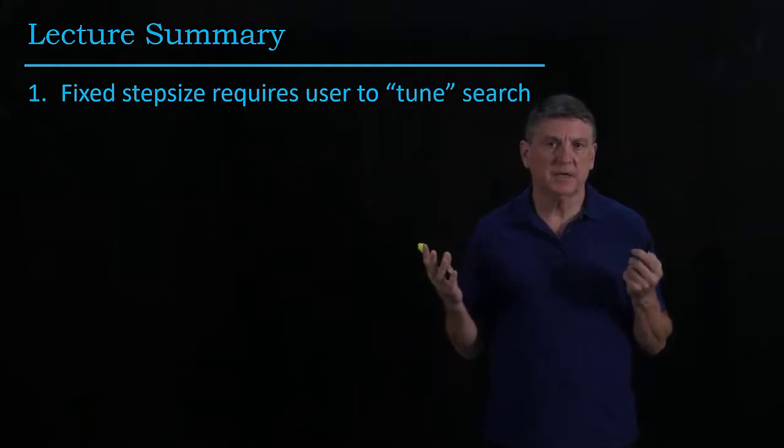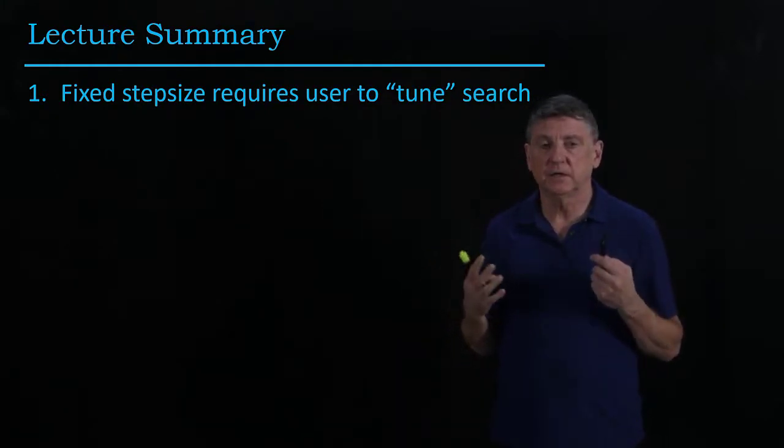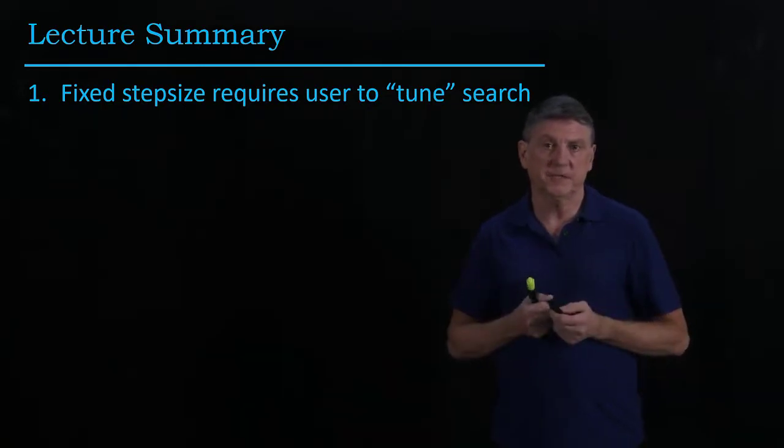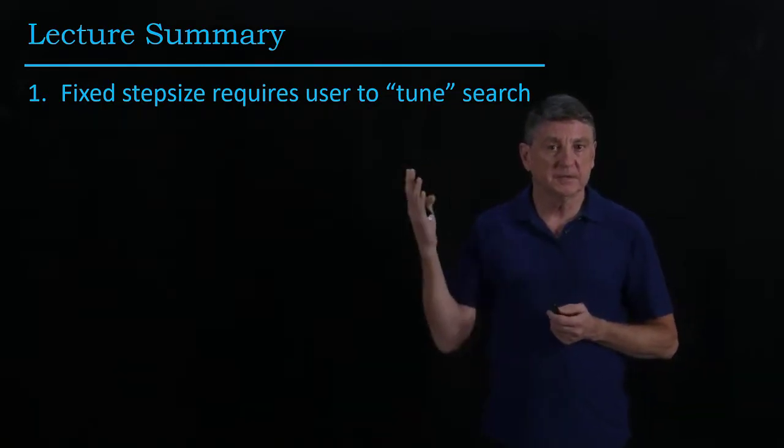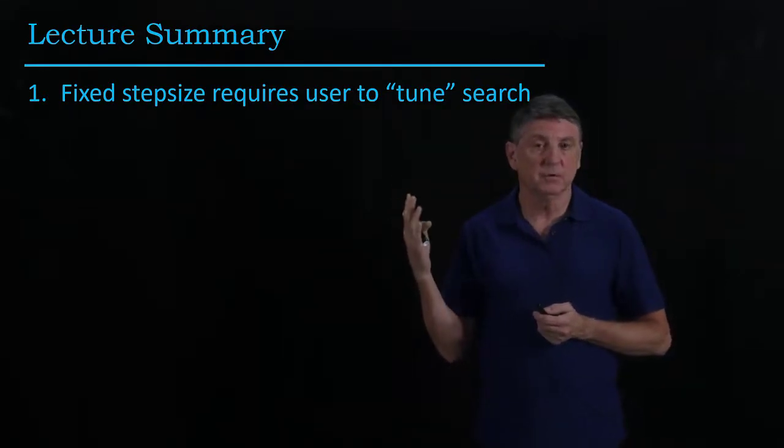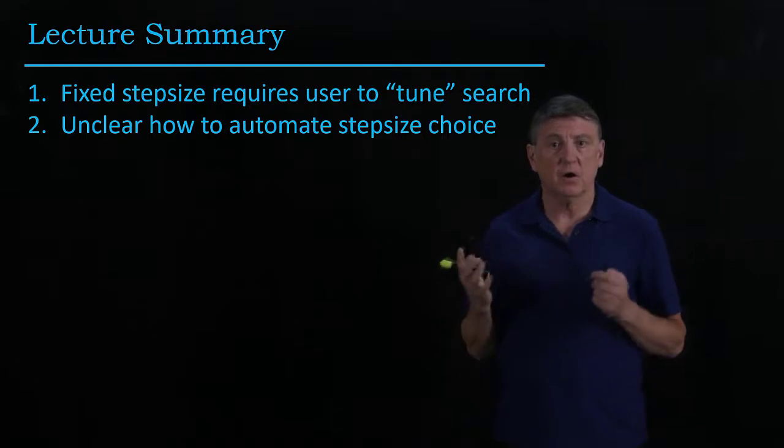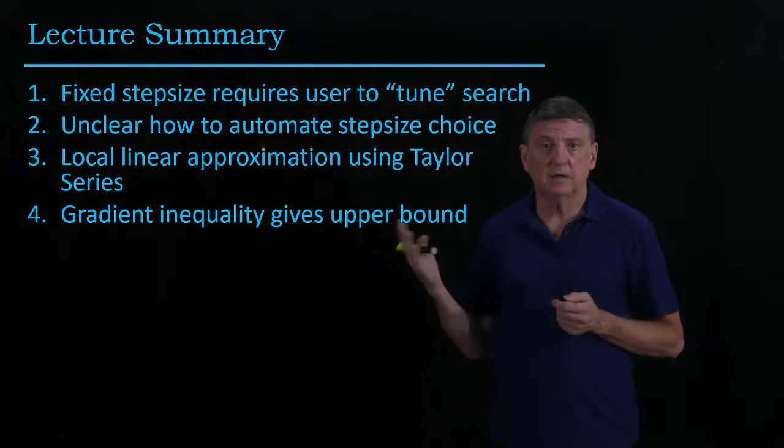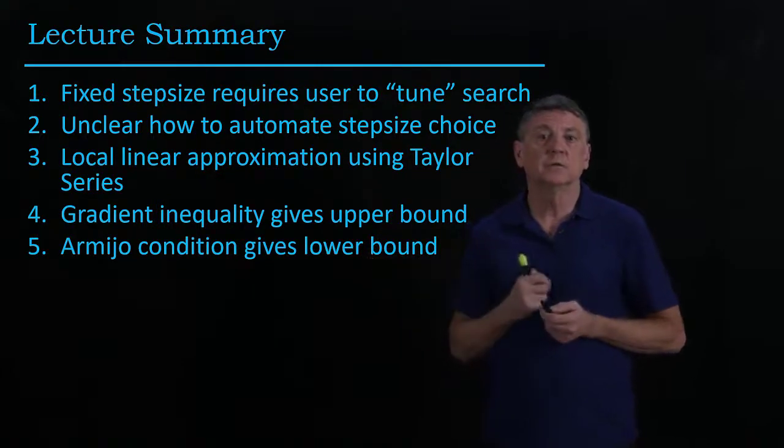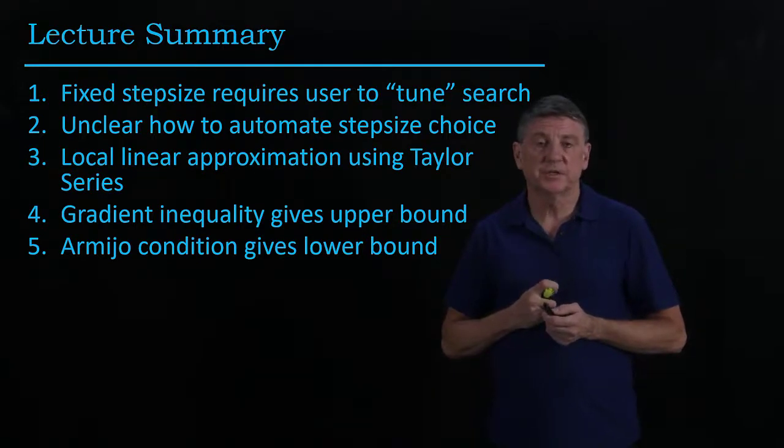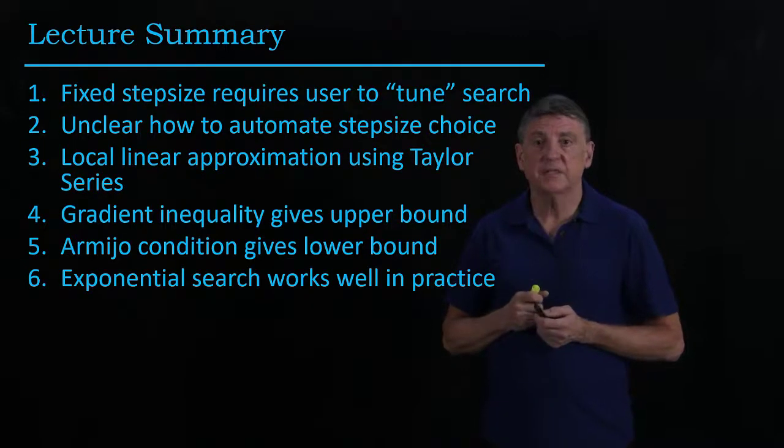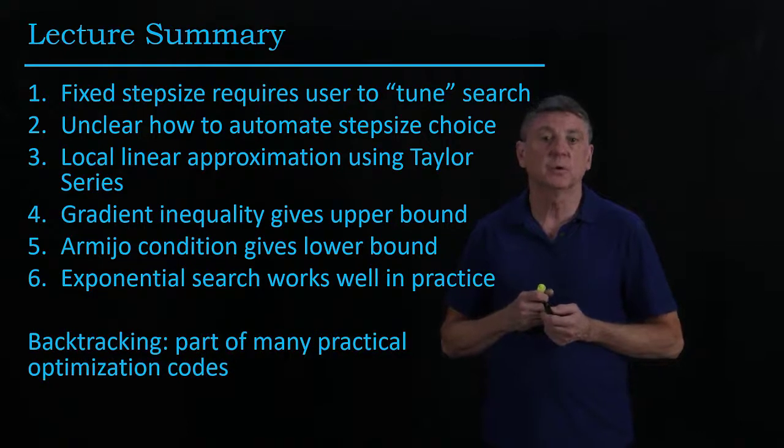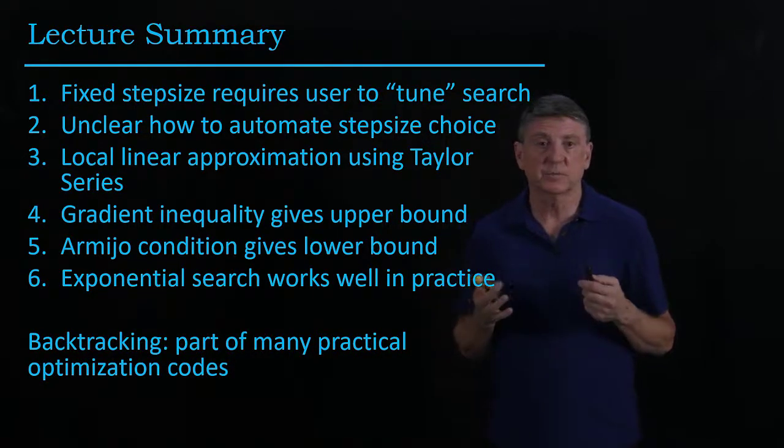So what have we learned in this entire lecture? Well, we've learned that fixed step size is a way to get around the user providing us with a second derivative information. But the disadvantage is that the user now has to know something about what they're searching. It's unclear how to automate that search choice. What we did was we used a local linear approximation, and in the end what we chose was the Armijo condition, which gives us a bound on what's happening. And these exponential searches turned out to work well in practice. Armijo backtracking or some other form of backtracking is part of most practical optimization codes that I've come across.